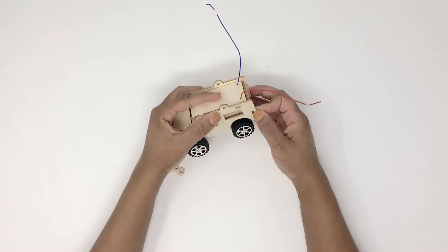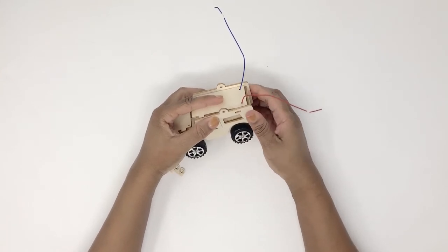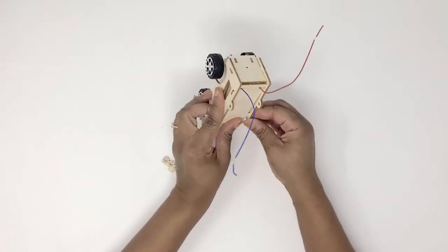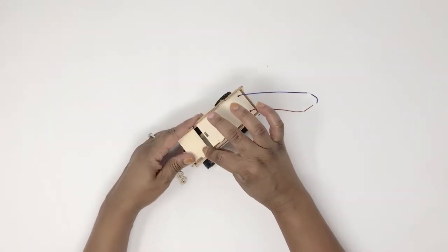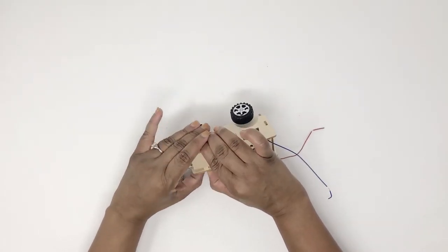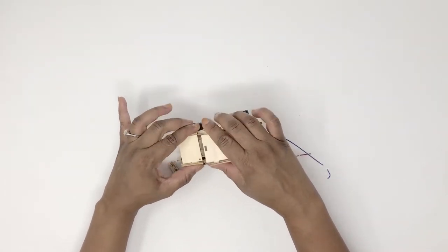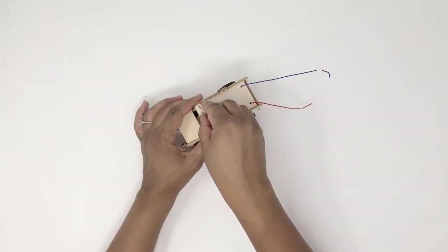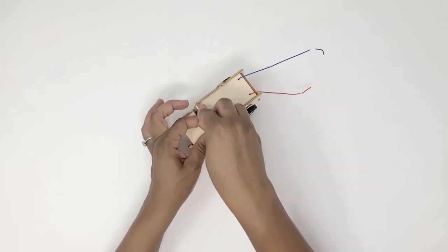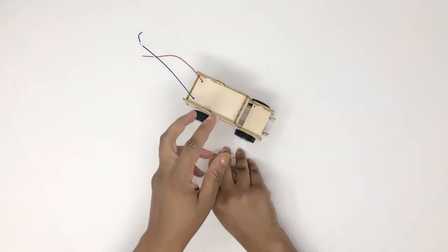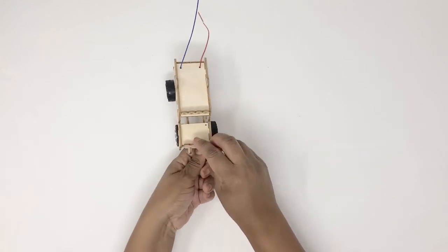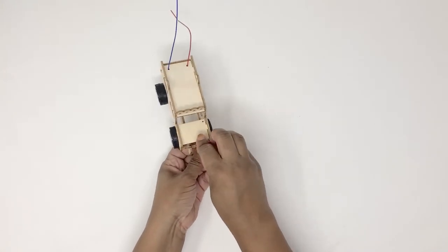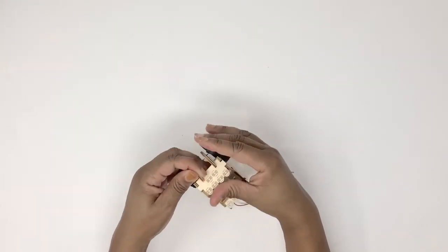Now attach the other side of the car. Now we're going to attach the front or the bumper of the car. This plays a pretty important part in making sure your car stays together and doesn't fall apart.